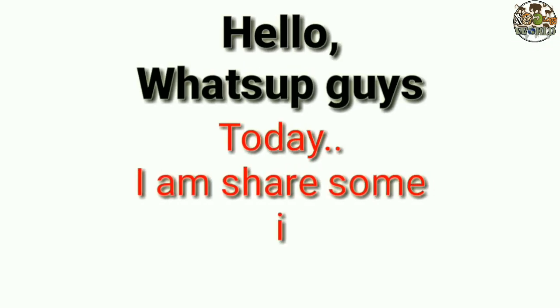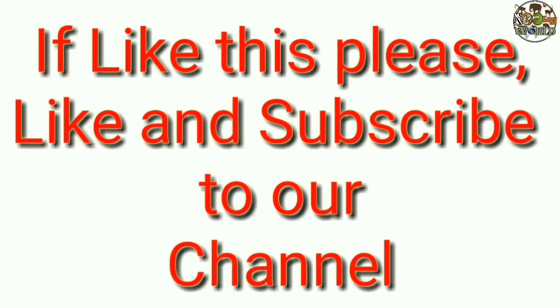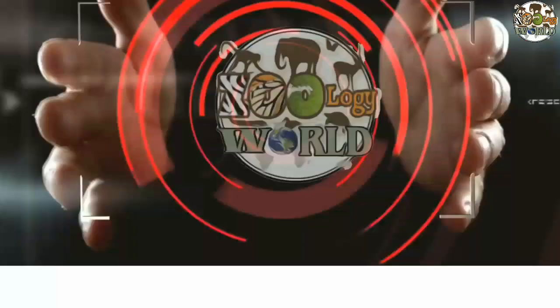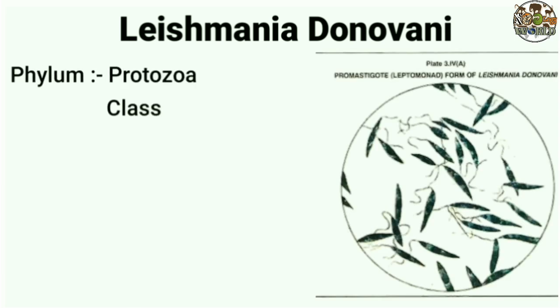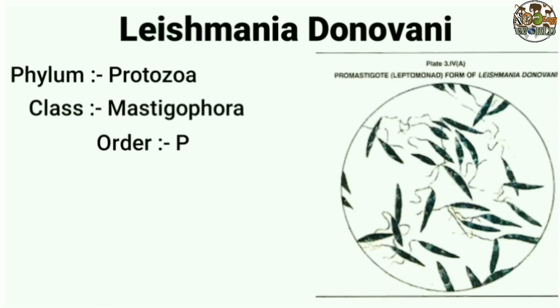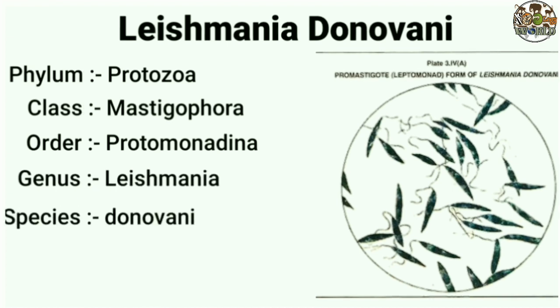Today I am sharing some information about Leishmania donovani. It is an organism found in group Phylum Protozoa, class Mastigophora, order Protomonadina, genus Leishmania, species donovani.